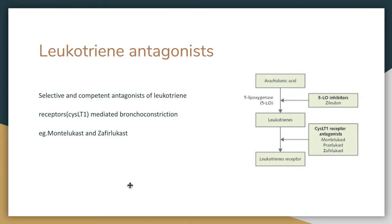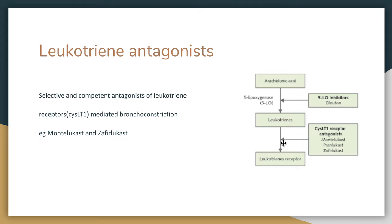Apart from leukotriene antagonists, we also have glucocorticoids which prevent the entire inflammatory pathway — they prevent the production of prostaglandins and other inflammatory mediators. Leukotriene antagonists selectively and competitively inhibit the actions of leukotrienes such as C4, D4, and E4, which cause bronchospasm, increase in bronchial secretion, and mucosal plugging.